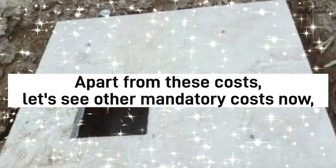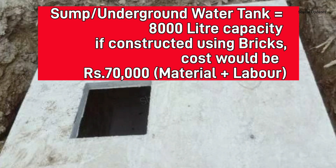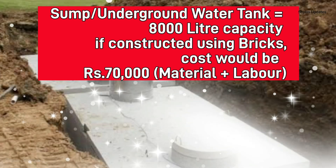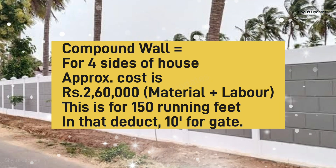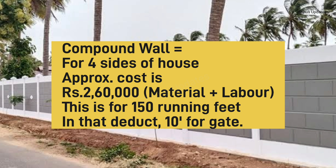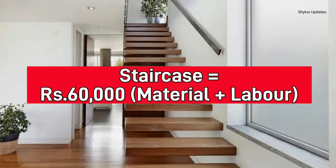Underground water tank: For 8,000 litre capacity, if constructed using bricks, cost would be Rs. 70,000 — which is for both material and labour. Septic tank: Rs. 70,000, which includes material and labour cost. Compound wall: constructed on 4 sides of house, approximate cost is Rs. 2,60,000, which includes both material and labour cost — this is for 150 running feet, deducting 10 feet for gate.